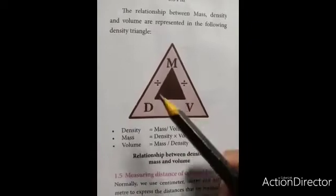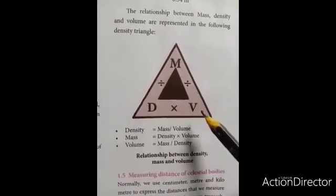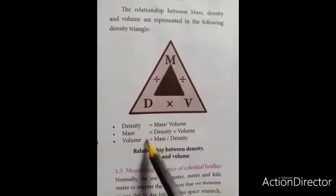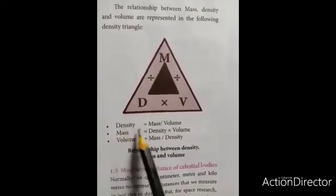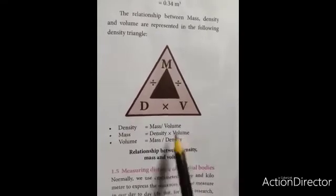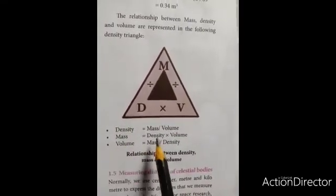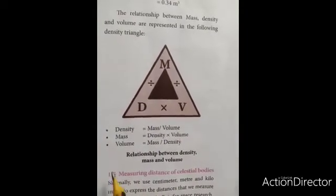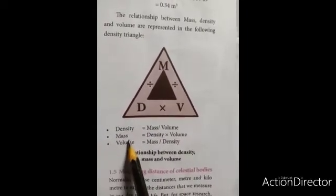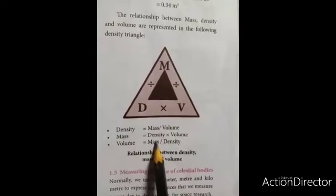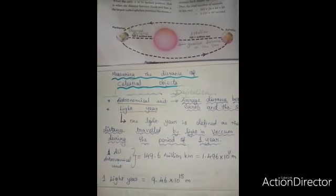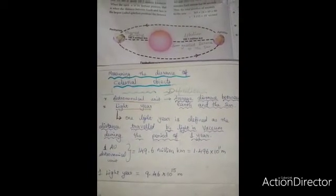The relationship between mass, density and volume is represented here. To find density, we have the formula mass by volume. To find mass of an object, we have to multiply density with volume. To find volume, we have to divide mass from the density.